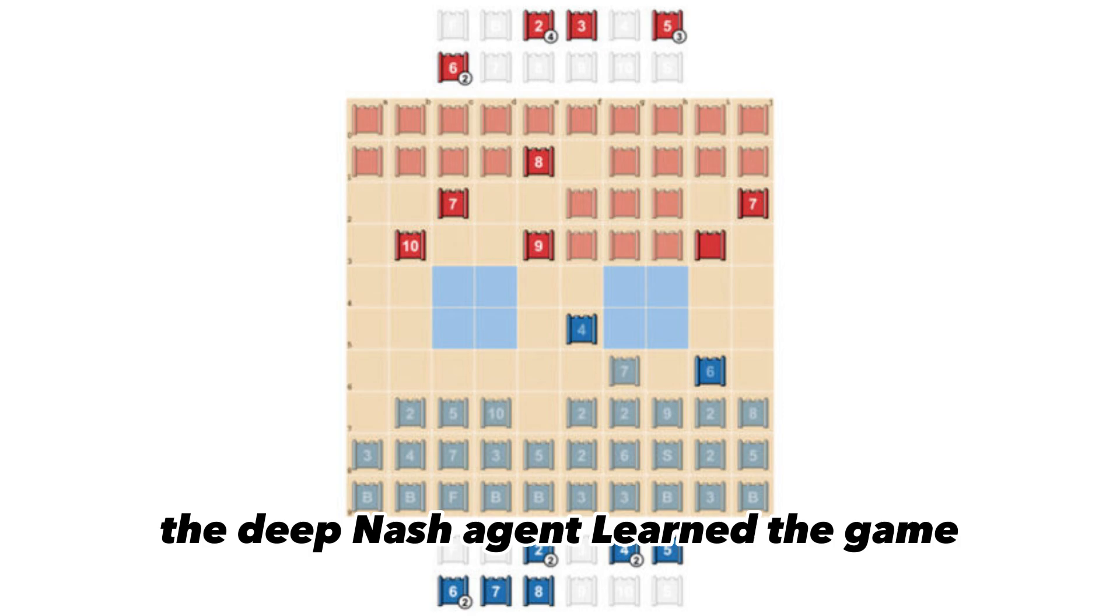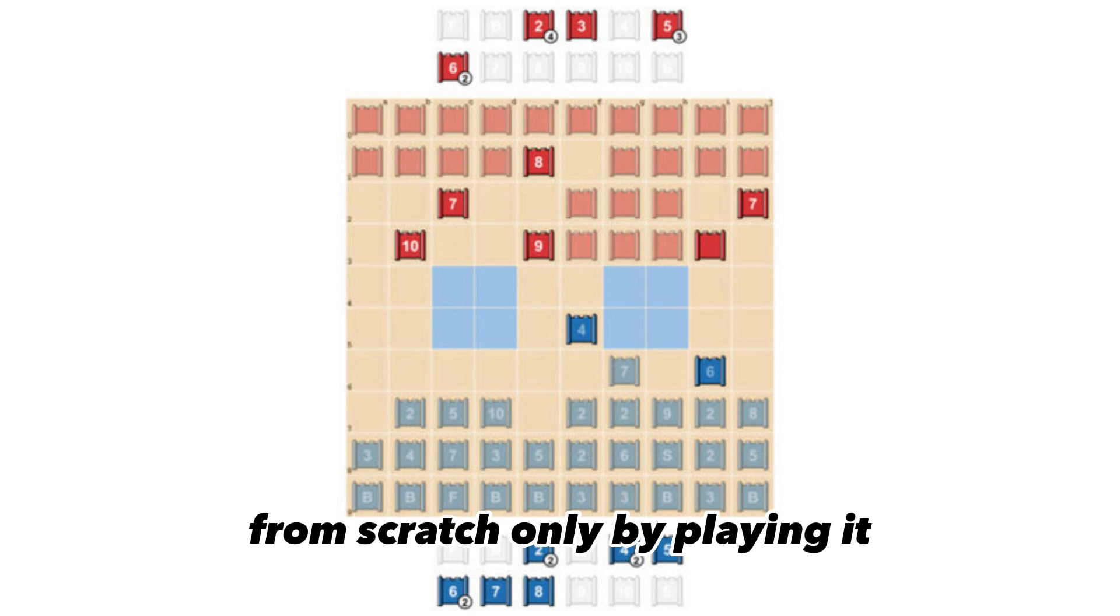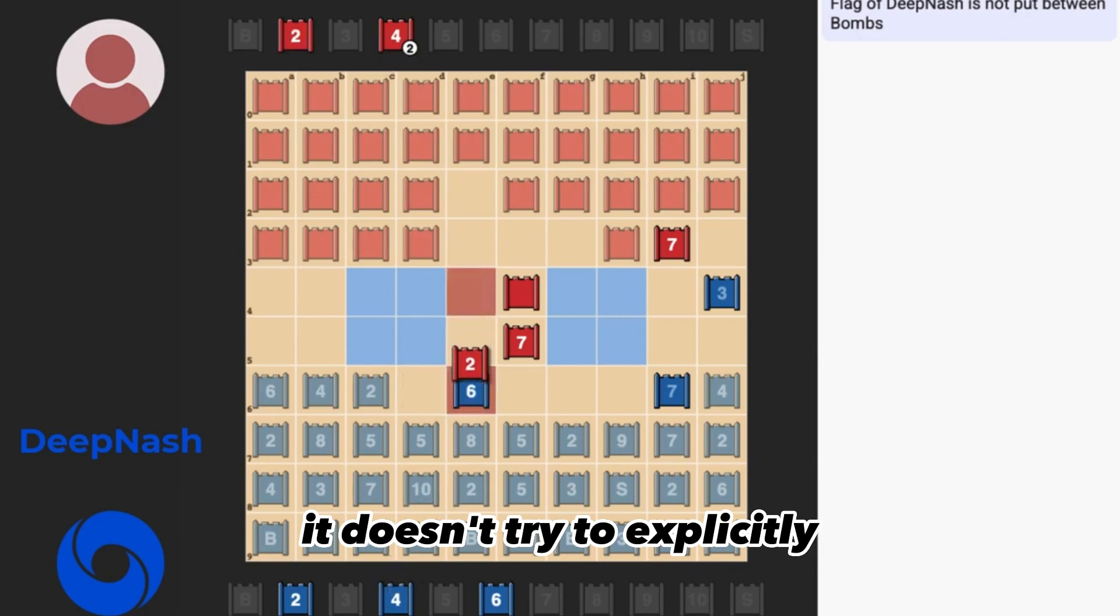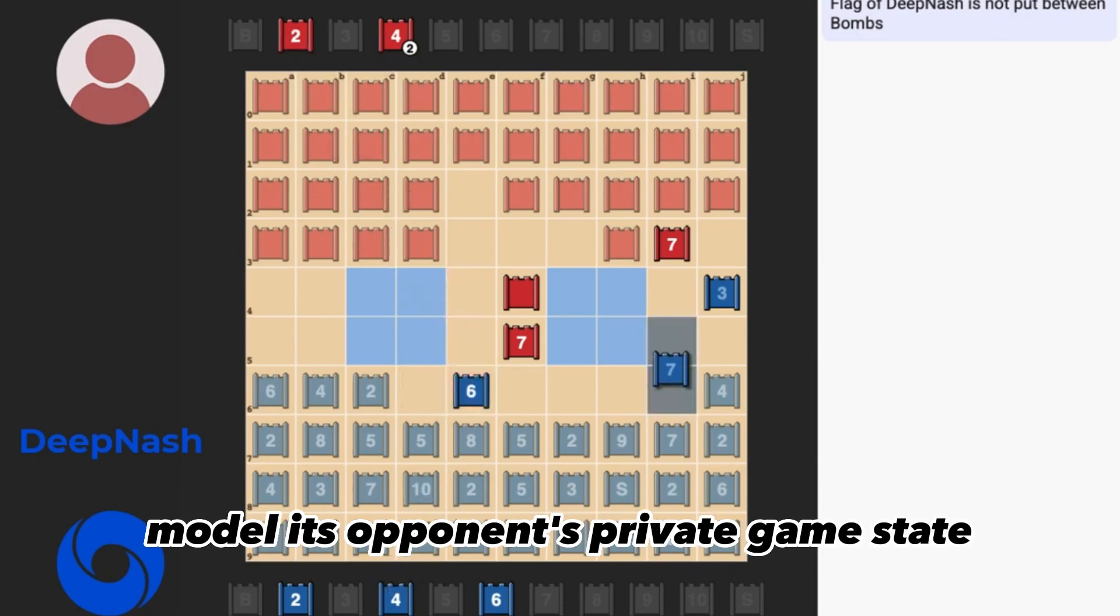The DeepNash agent learned the game from scratch only by playing it. DeepNash uses model-free deep reinforcement learning. That is to say, it doesn't try to explicitly model its opponent's private game state.